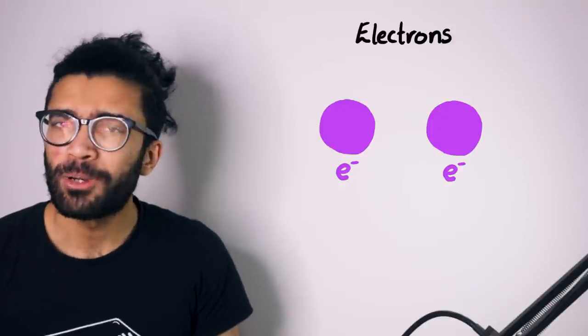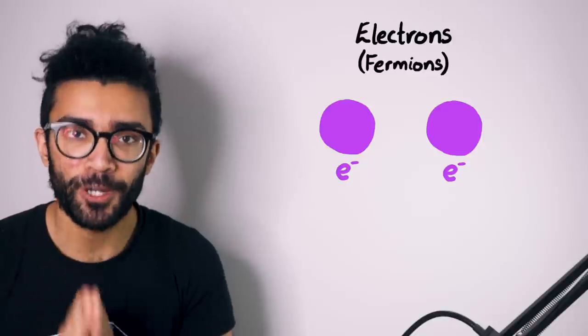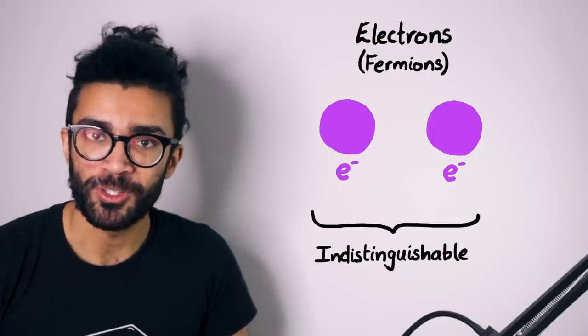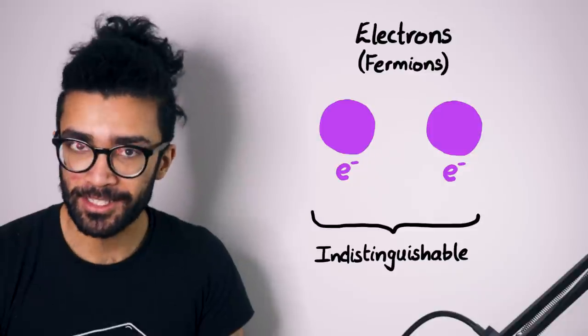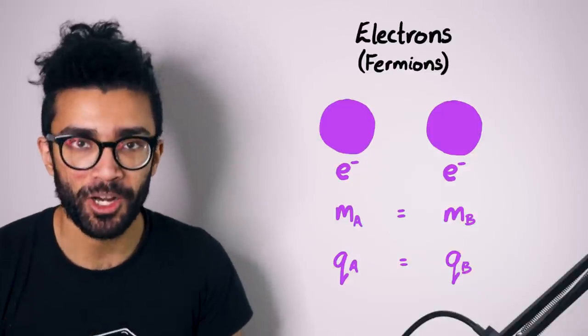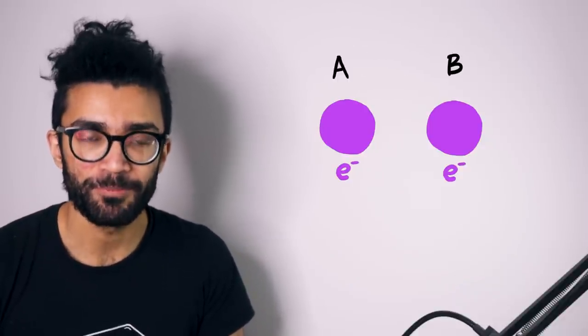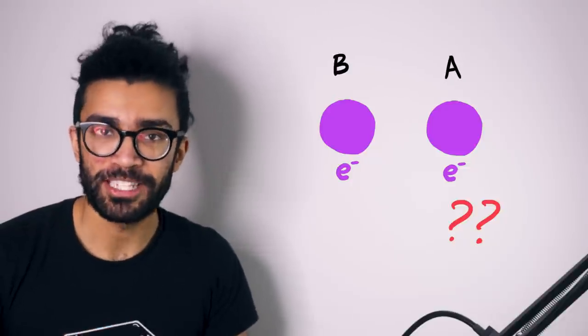In order to understand how electrons are arranged in atoms, we will start by considering a system of two electrons. Electrons are a famous example of a particular type of particle known as a fermion. Fermions are a type of indistinguishable particle, which means that two fermions of the same kind cannot be told apart from each other — they cannot be distinguished. They're identical because they have the same mass, same charge, same everything. Moreover, if we have a system of two indistinguishable particles and we leave it for a little while, then later on we have no way of knowing which particle is which.